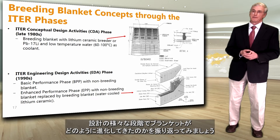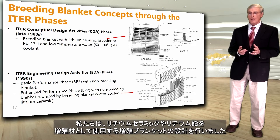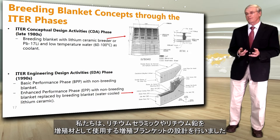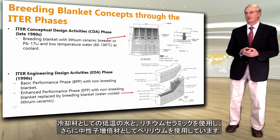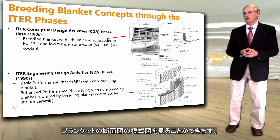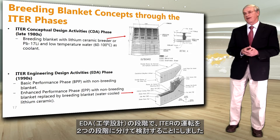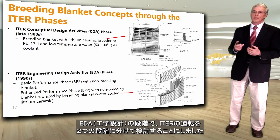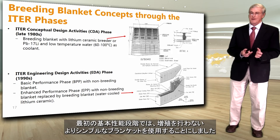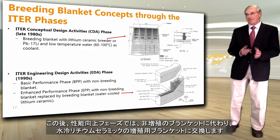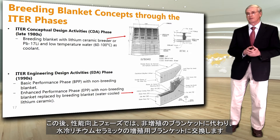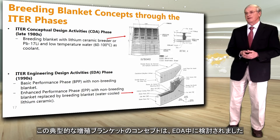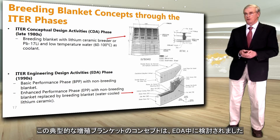Looking back at how the blanket evolved during these different phases: during the CDA we had a breeding blanket design using lithium ceramic breeder or lithium-lead as a breeder, and low-temperature water as a coolant. With lithium ceramic we also had beryllium as a neutron multiplier. During the EDA phase, we decided to consider ITER operation in two phases: a so-called basic performance phase using a non-breeding simpler blanket, and then an enhanced performance phase where the non-breeding blanket would be replaced by a breeding blanket — a water-cooled ceramic one.